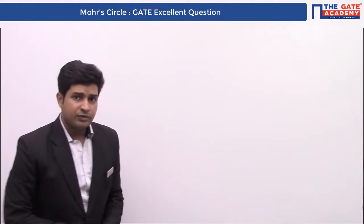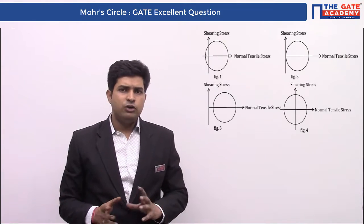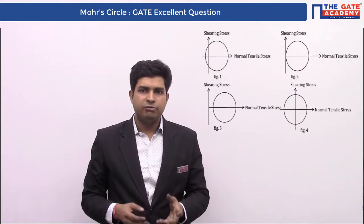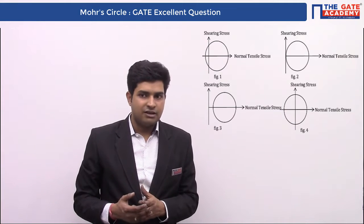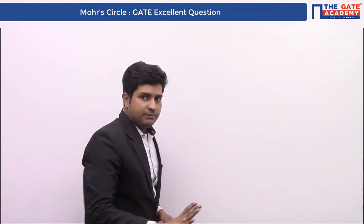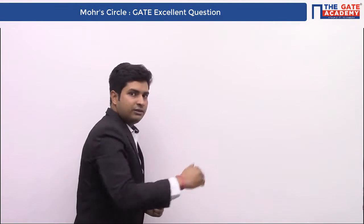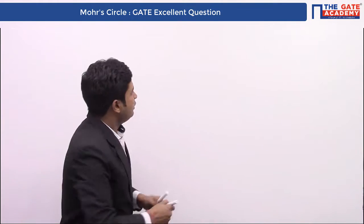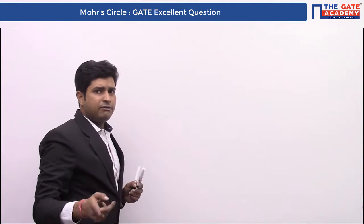In this question, a cantilever beam is subjected to a uniformly distributed load, and we are given a few diagrams. Out of these diagrams, we have to find which one correctly represents the state of stress of any point above the neutral axis. To solve this problem, first we need to draw the shear force diagram and bending moment diagram, then we will analyze the beam.